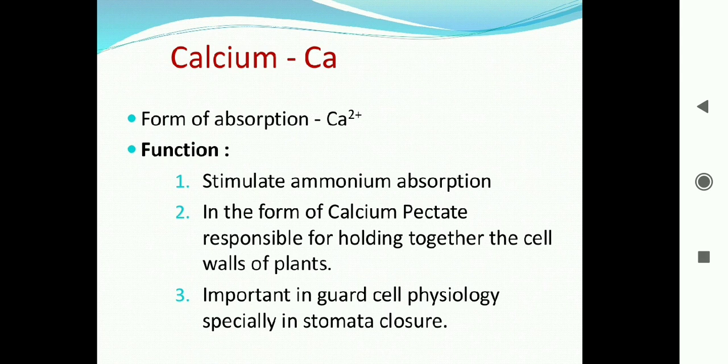Calcium is absorbed by the plant in the form of calcium ions. The important main functions of calcium are: it stimulates ammonium absorption, and in the form of calcium pectate it is responsible for holding together the cell walls of plants, playing a very important role in cell wall synthesis, and it is important in guard cell physiology, especially in stomata closure.